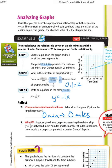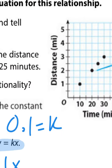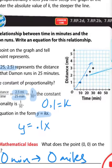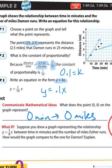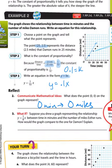Suppose you draw a graph representing the relationship y equals 1 eighth x between time in minutes and the number of miles Esther runs. How would the graph compare to the one for Damon? Okay, so Damon's was 1 tenth x. If we draw a graph for 1 eighth x, let's picture these points here. Here, Damon's is at 1 tenth. Esther's would be at 1 eighth. Here, Damon's is at 2, 20. Esther's would be at 2, 16. So if I connect a line through those points, notice Esther's is a little bit steeper. In the same amount of minutes, she's traveled slightly more miles.